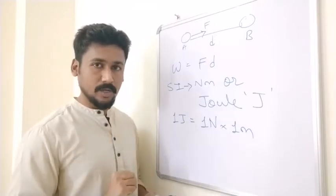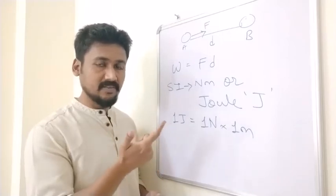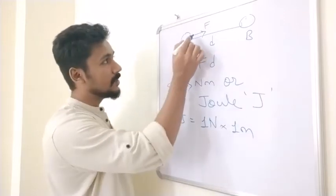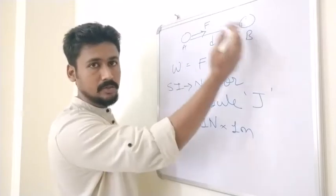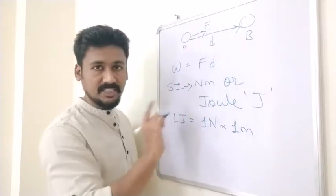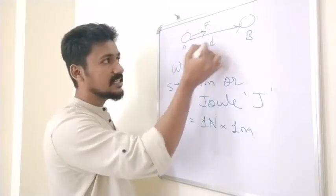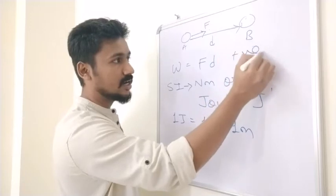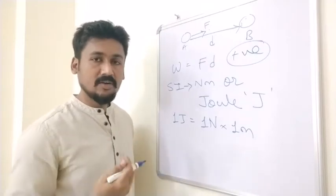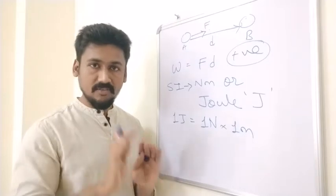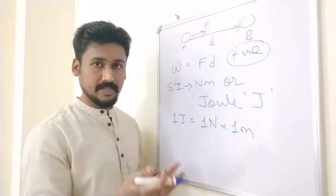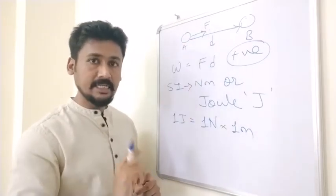Now there can be three types of work: positive, negative, and zero. Positive work means that if you are applying force from A to B — that is from left to right — and the object is also moving from A to B, then the direction of force and direction of displacement is the same. So if force and displacement are in the same direction, then you have done positive work. For example, if you push a car, the car moves forward and your force is also forward — that is positive work.